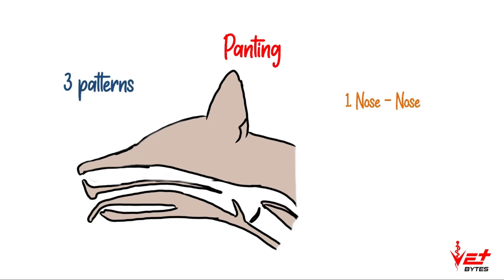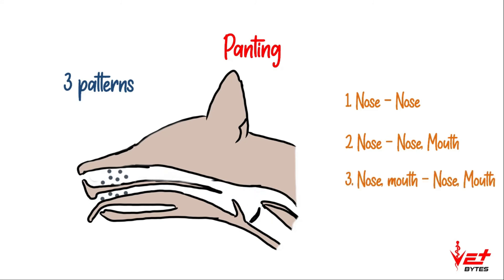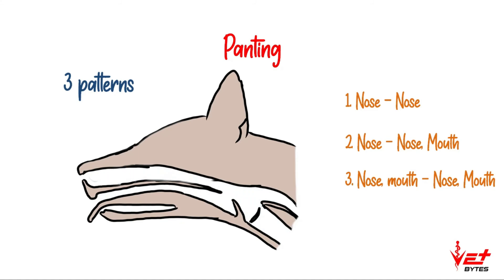The first pattern is nose-nose, where inhalation occurs through the nose and exhalation also occurs through the nose. The second is nose and nose-mouth, where inhalation occurs through the nose and exhalation occurs through both nose and mouth. In the third pattern, inhalation occurs through both nose and mouth and exhalation occurs through both nose and mouth. The first pattern is seen when body temperature is slightly above normal, while the second and third are seen when body temperature is significantly elevated.